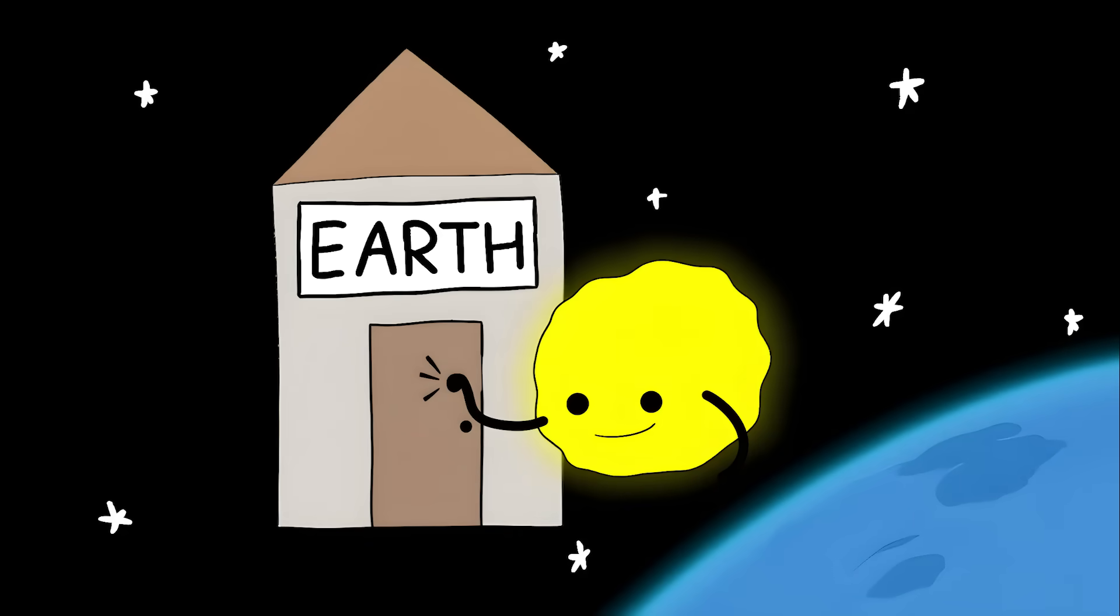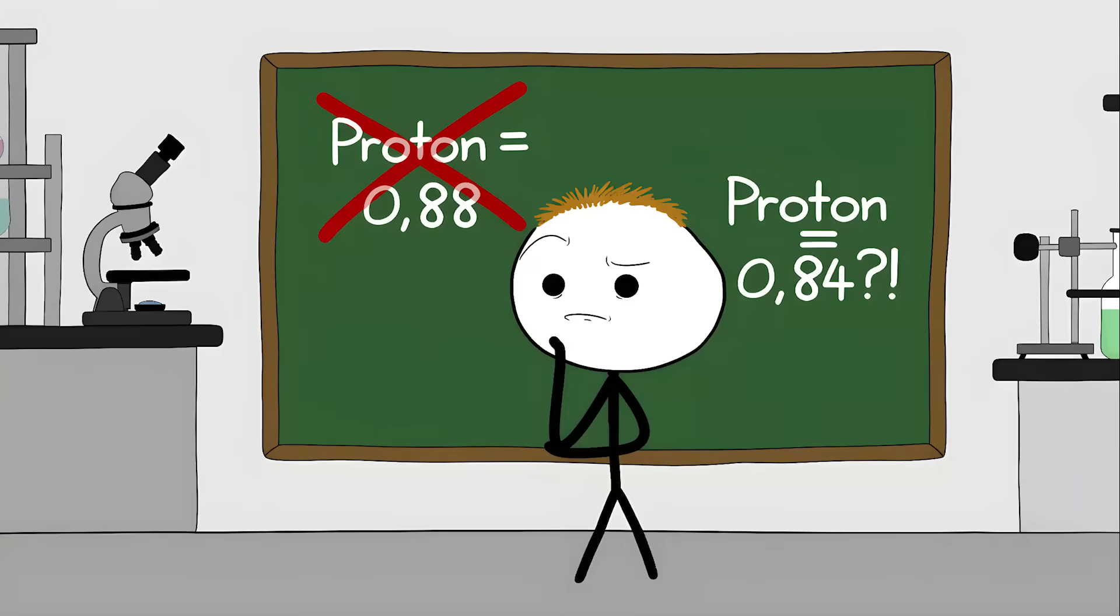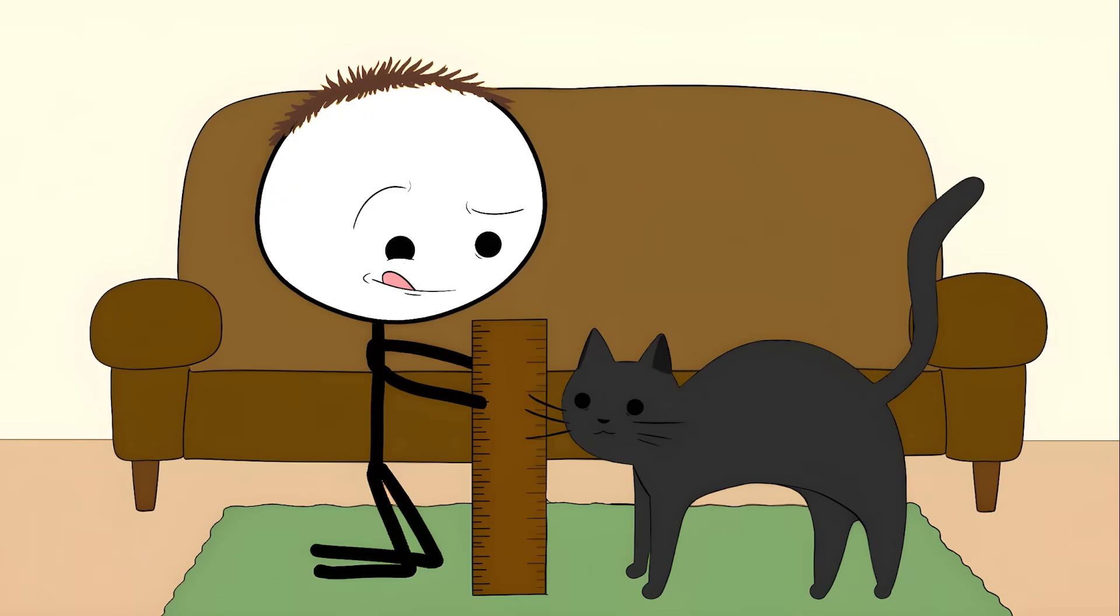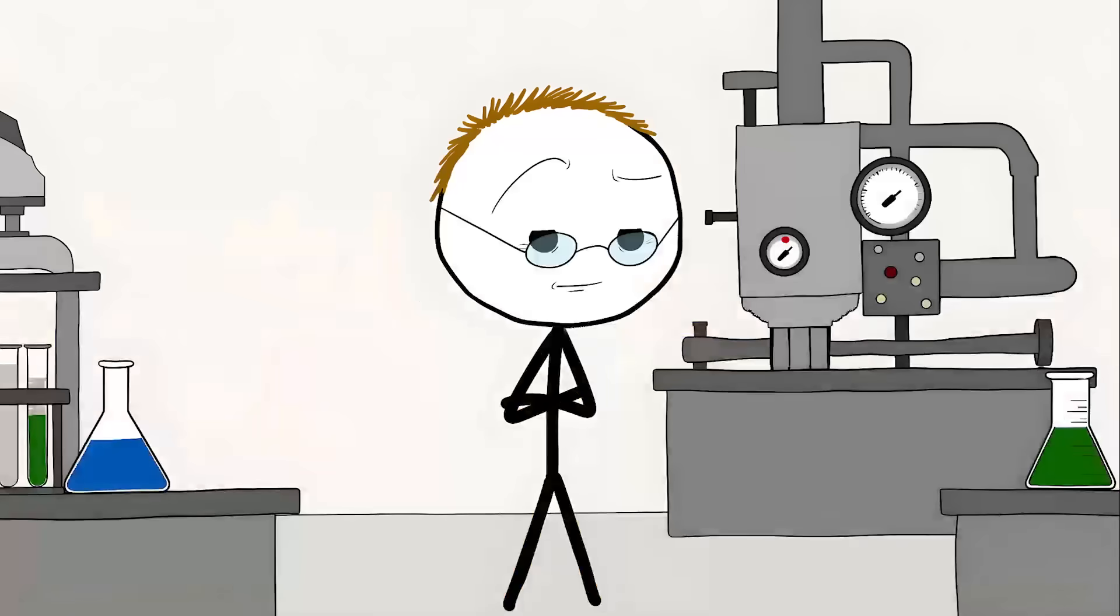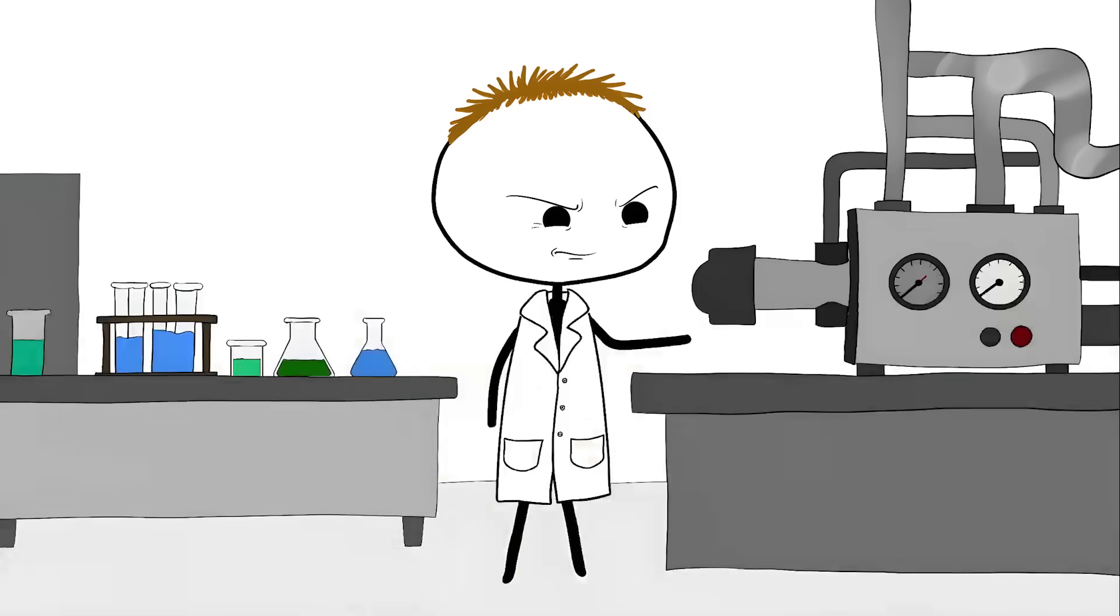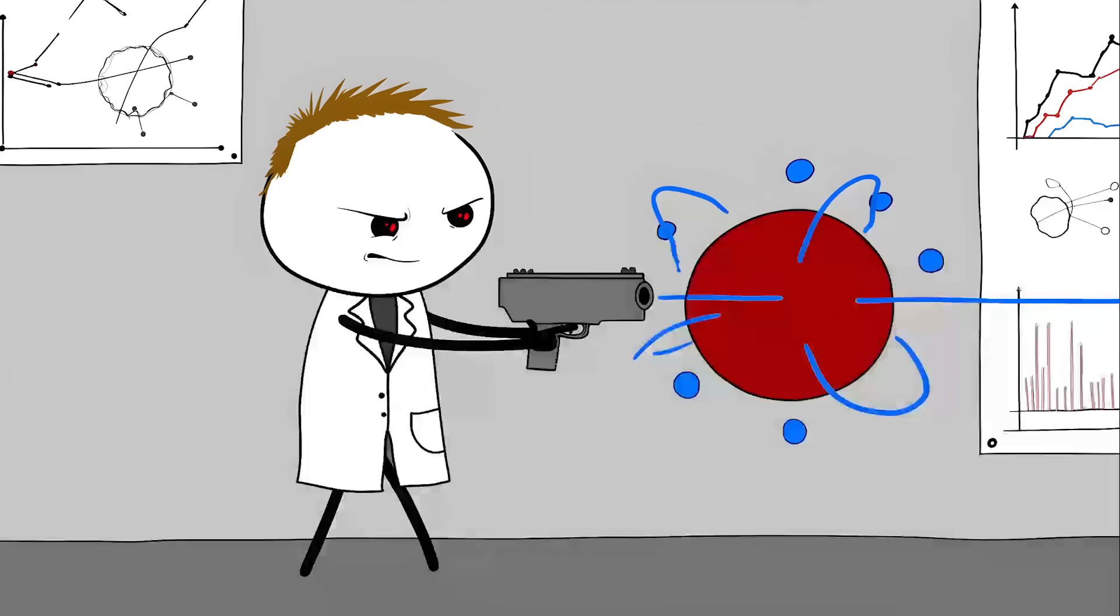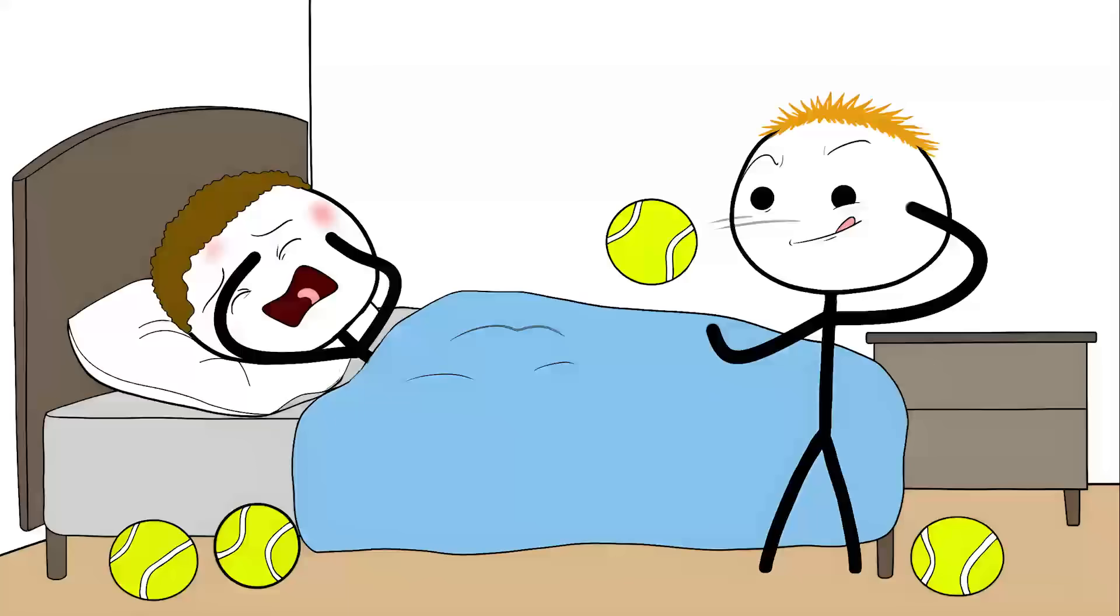Number four: the proton radius puzzle. Imagine measuring your cat with a regular ruler and then with a fancy laser tool, but you get two completely different sizes. That's exactly what happened when scientists tried to measure the proton. Scientists have been measuring protons for decades using electrons. They shoot electrons at protons like tiny bullets and watch how they bounce off.